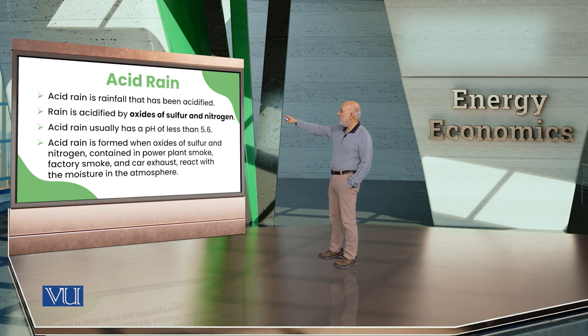So pH less than 5.6 is considered acid rain. pH 7 is neutral — that is normal water, like a bottle of water. You can see on a Nestle bottle that pH is equal to 7.0.